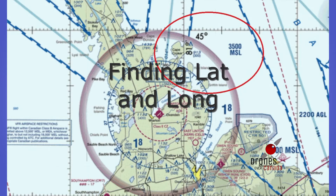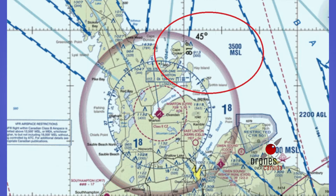One of the biggest questions we get is about latitude and longitude on the charts — specifically how to find your lat/long based on the charts. This is a question you will most likely get on your RPAS Advanced exam, and it has shown up on the basic exam as well. I've used an example of a chart near Midland and circled the latitude and longitude. You'll notice the 45 degrees and the 81 degrees — that's the easiest way to find your rough latitude and longitude. For more precision, use the hash marks on both sides of the square and interpolate. You can also use Google Maps if you're already at the spot and need to confirm your latitude and longitude.